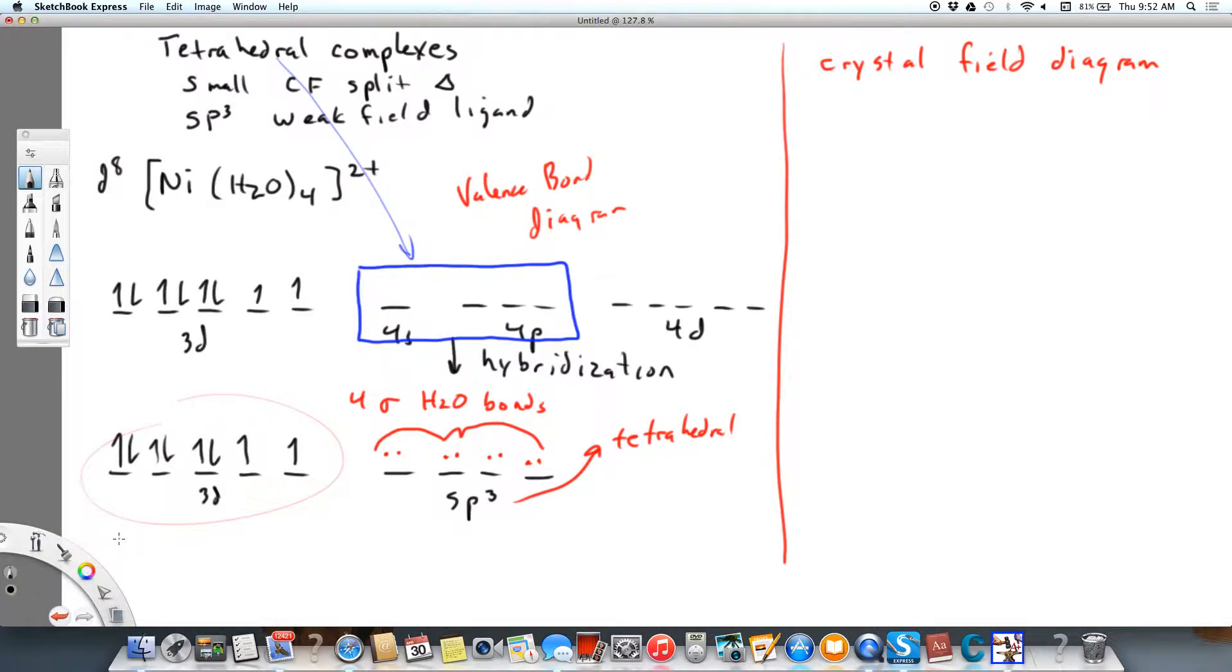First, we're going to look at nickel again. This is going to be our 3d orbitals. We're going to get a small split. This is going to be dxy, dyz, and dxz. This is our d(x²-y²) and d(z²). It's basically the flip of the octahedral.